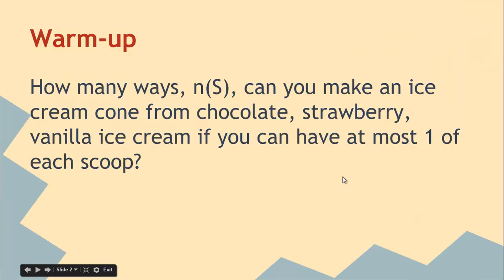So we'll look at some examples together. How many ways, n(S), can you make an ice cream cone from chocolate, strawberry, vanilla ice cream if you can have at most one of each scoop? When you start to think about this question, a single chocolate and a single strawberry and a single vanilla is different than a chocolate and a strawberry, a two scoop.